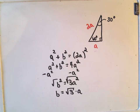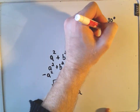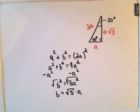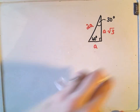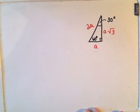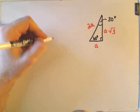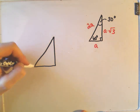So if the side opposite 30° is a, then the hypotenuse is 2a and the side opposite 60° is a√3. It's always nice to be able to justify things, because then you're understanding where they come from rather than just memorizing. That way, if you forget the formula on a test, you can figure it out.